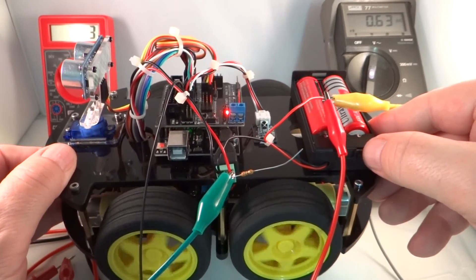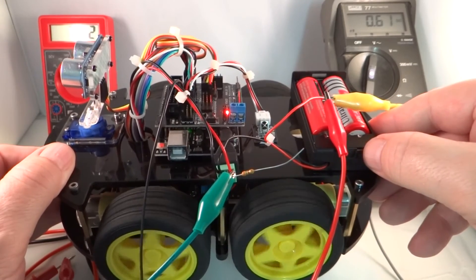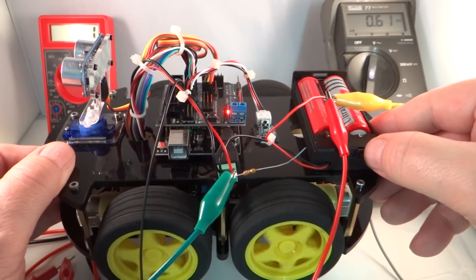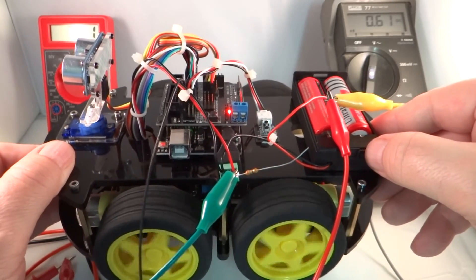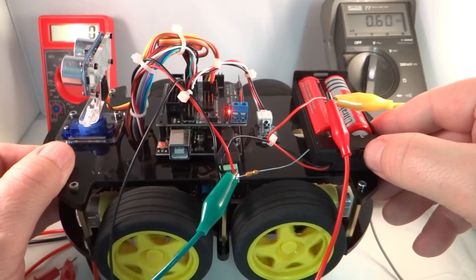You can see about 600 milliamps DC. 610, 620 milliamps and about 7.8 volts when the car is under that load.